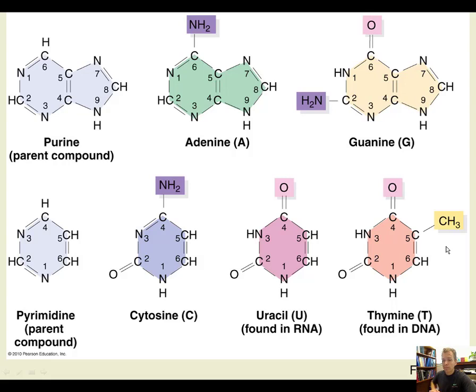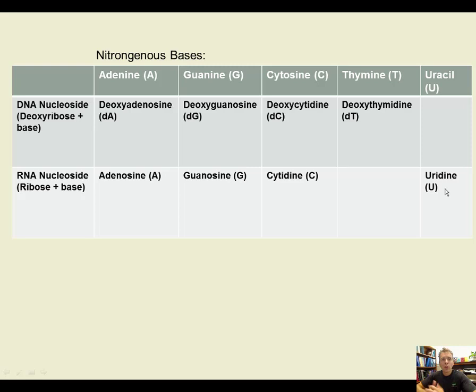The bases are referred to as adenine (A), guanine (G), cytosine (C), thymine (T), or uracil (U). However, when you talk about the nucleoside — the base plus the sugar — it gets a new name. DNA nucleosides are called deoxyadenosine, deoxyguanosine, deoxycytidine, or deoxythymidine. RNA nucleosides are similar but without the deoxy prefix: adenosine, guanosine, cytosine, or uridine. So the names change depending on whether you're talking about the base only or the base plus the sugar together.